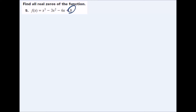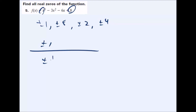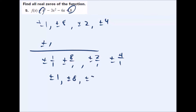The first thing is once again listing the factors of the constant and the leading term's factors. Here we have plus or minus 1, plus or minus 8, plus or minus 2, plus or minus 4 — those are all the factors of 8. The leading coefficient is 1, so we just have plus or minus 1. Combining those, the possible zeros are plus or minus 1, plus or minus 8, plus or minus 2, and plus or minus 4.